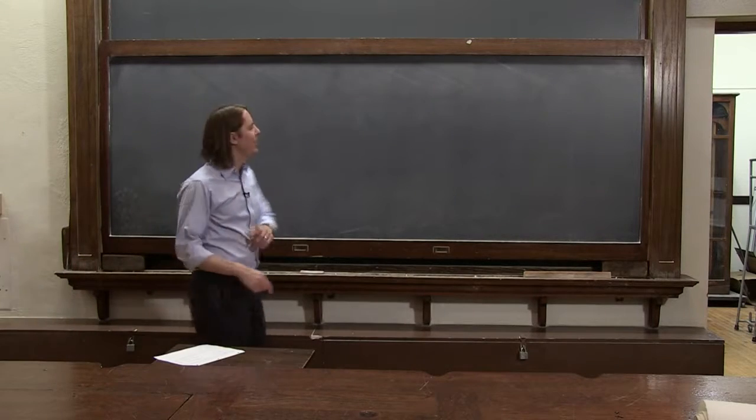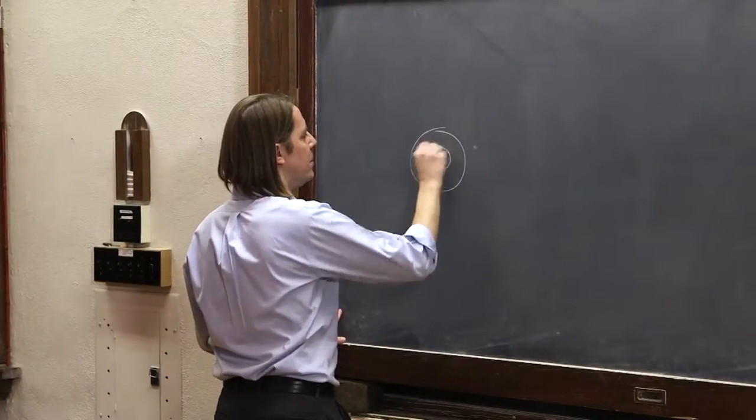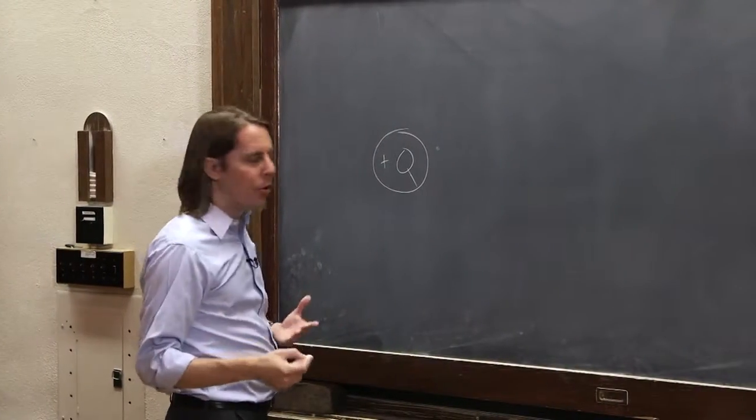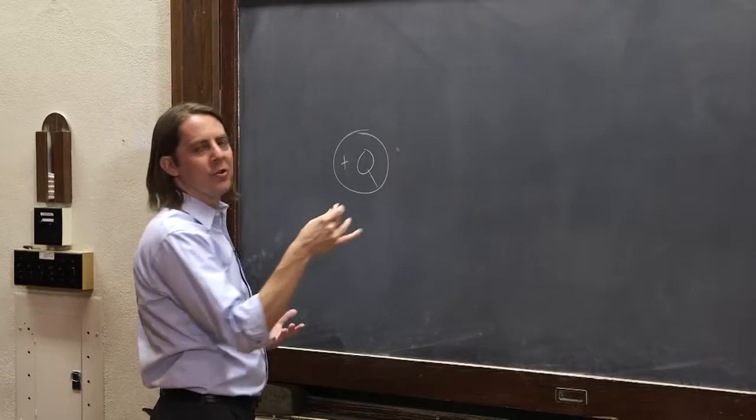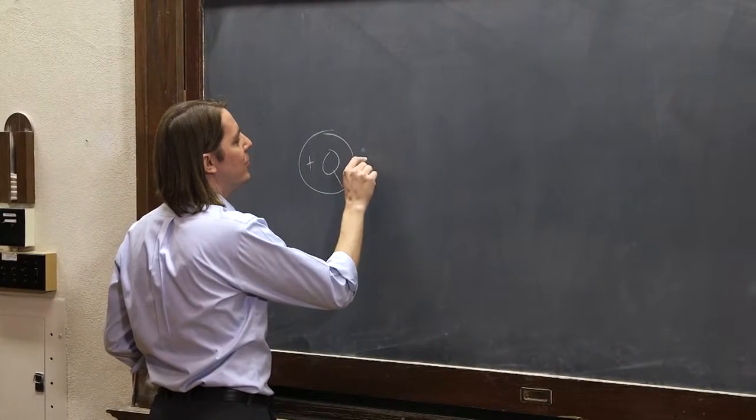We've been drawing our electric fields with something called a quiver plot. Remember, it looked kind of like this. If we have a charge plus Q, we want to draw the field. We just think about the force on a test charge, or we think about what the electric field should be based on Coulomb's law.